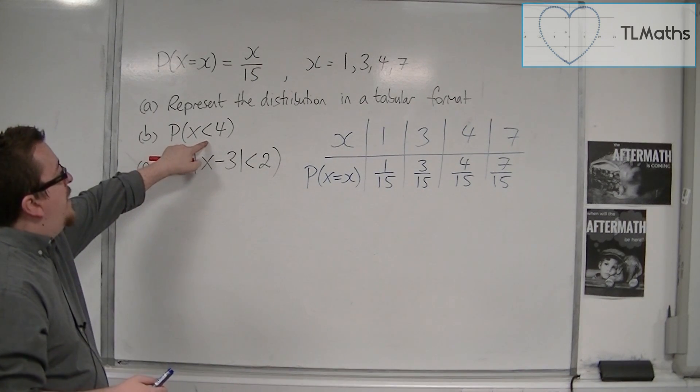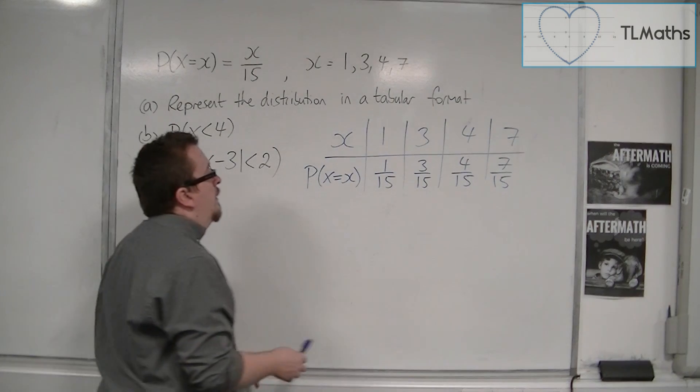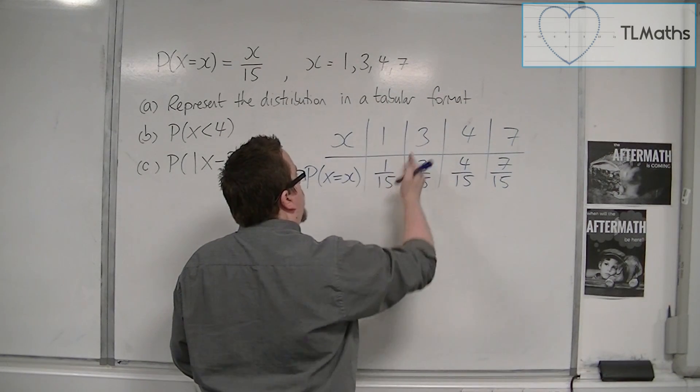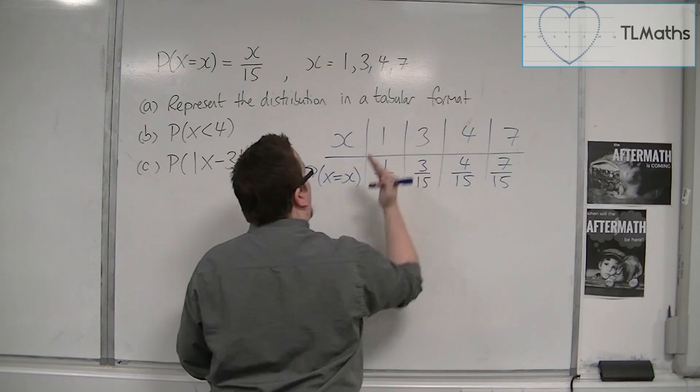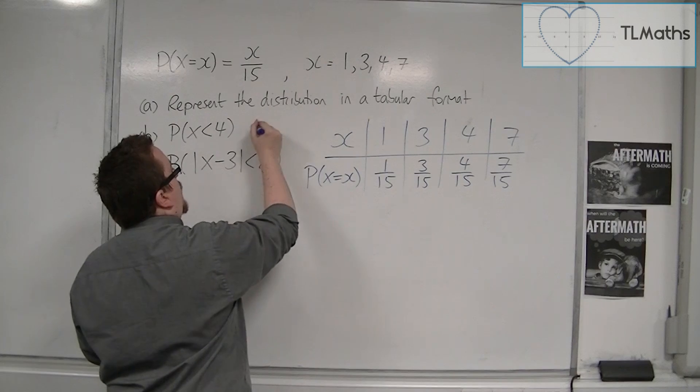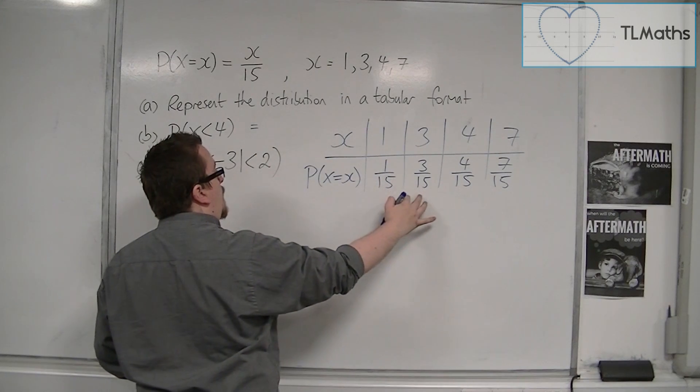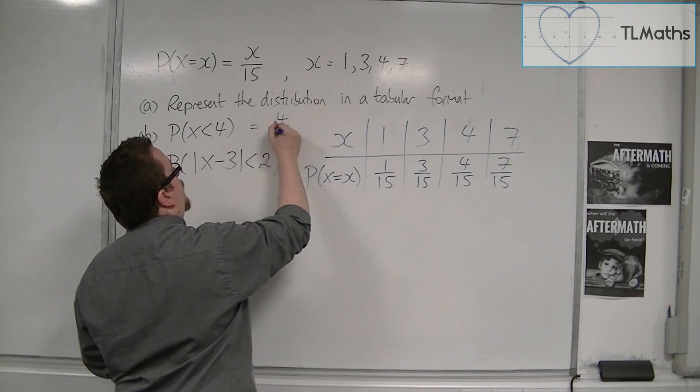Now the probability of x being less than 4 is the probability of x equals 1 plus the probability of x equals 3. So those two are the only ones that are less than 4, and so it's equal to 1 over 15 plus 3 over 15, and so it's 4 over 15.